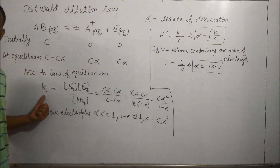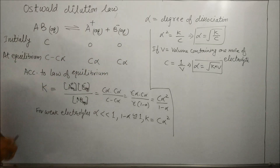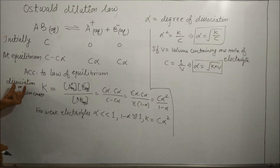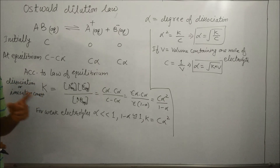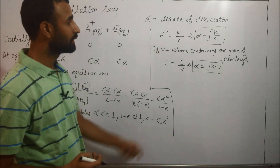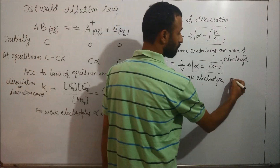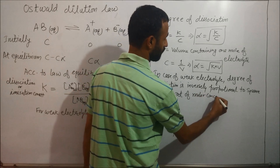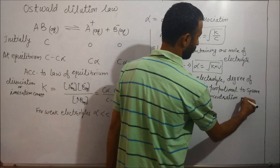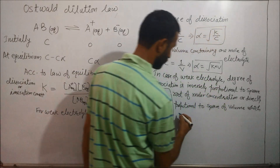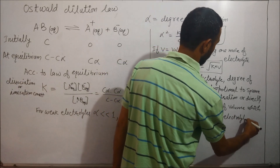This equilibrium constant for weak electrolytes is known as the dissociation or ionization constant of the electrolyte. Ostwald's Dilution Law states that in the case of weak electrolytes, the degree of dissociation alpha is inversely proportional to the square root of molar concentration, or directly proportional to the square root of volume V containing 1 mole of electrolyte.